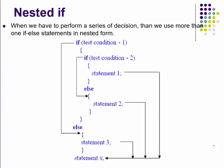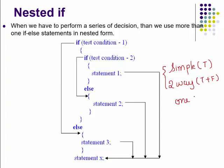We were discussing control statements, starting with decision making statements. The first form is the simple if statement, used only for the true branch. The second form is two-way branching, which specifies both true and false paths. Both these forms work with only one condition. When you have more than one condition, you use the if-else-if statement, also called the if-else-if ladder or multiple branching.